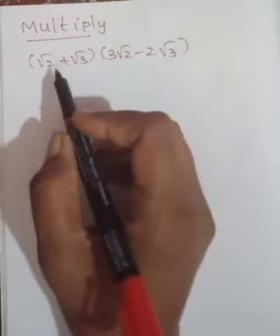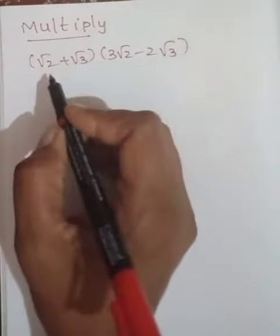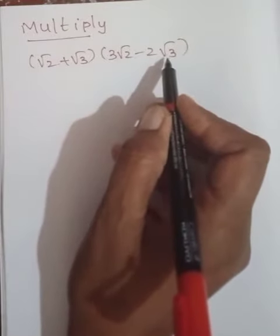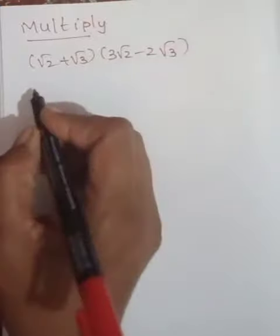We get this multiplication of these two terms: (√2 + √3)(3√2 - 2√3). How to simplify such sums? I will show you in a simple way.